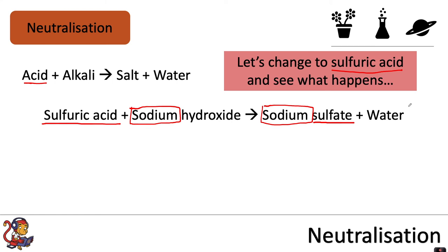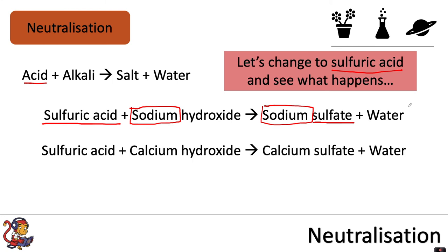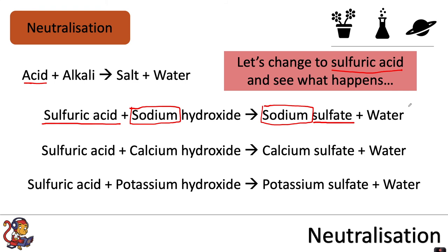In another example, sulfuric acid plus calcium hydroxide makes calcium sulfate plus water. And finally, sulfuric acid plus potassium hydroxide makes potassium sulfate plus water.